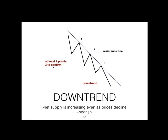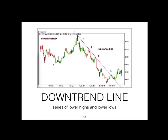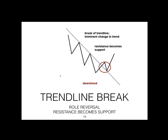Now, a downtrend: a downtrend line has a negative slope. In a downtrend the net supply is increasing even as prices decline. In the Bloom chart, the downtrend line is drawn by connecting a series of points on the resistance line — the second high must be lower than the first high, the third high must be lower than the second high. The downtrend line acts as resistance. When the downtrend line is broken to the upside, there is again a reversal of roles. In our market, we avoid downtrends — only trade uptrends.